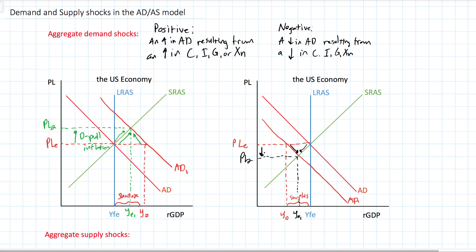A negative demand shock causes deflation — a fall in the average price level. Or, depending on the level of inflation at full employment, this might just be a fall in the inflation rate, known as disinflation. If inflation is still positive but lower than it was at full employment, we don't see prices actually fall — we just see lower rates of inflation. A negative demand shock causes a decrease in output, a decrease in the price level, and a recessionary gap.